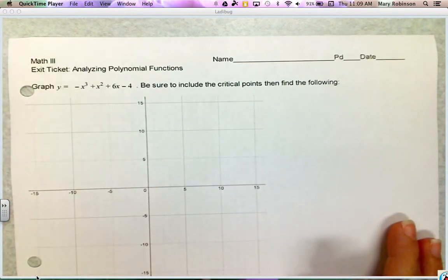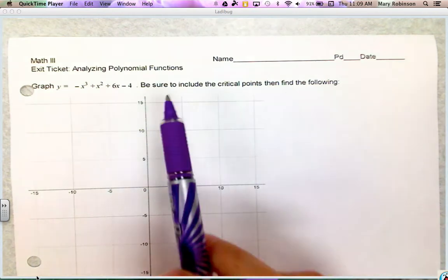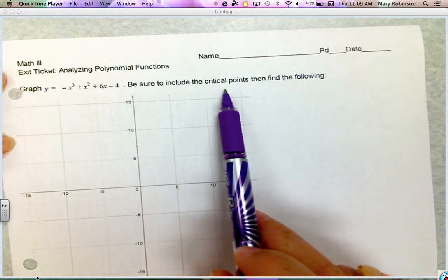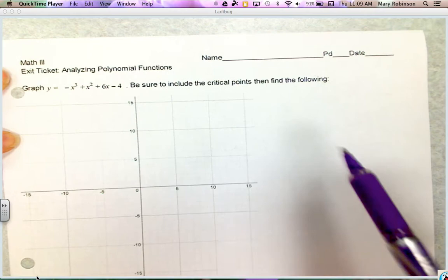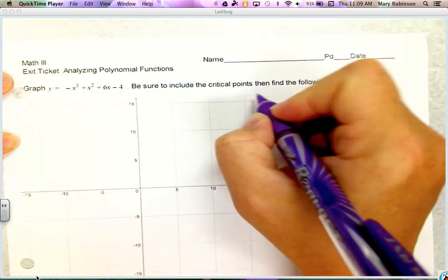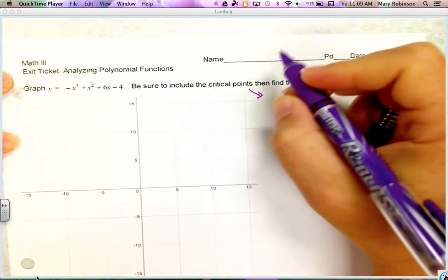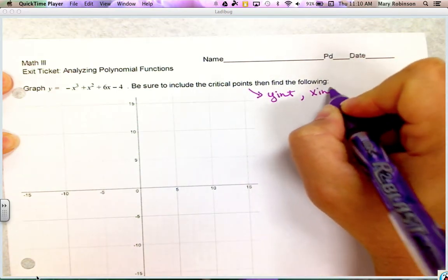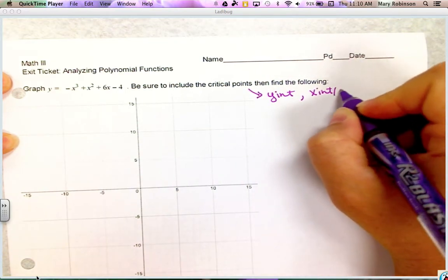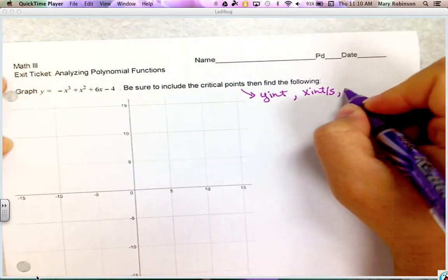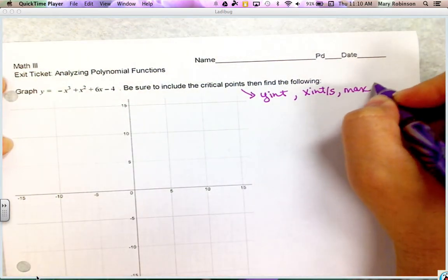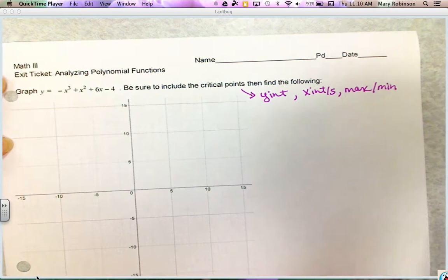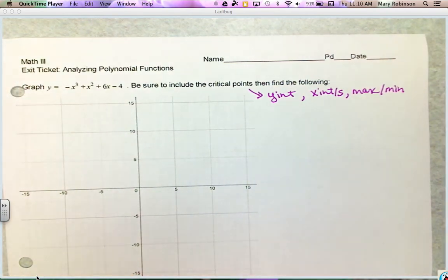Always read and understand what you're expected to do so you know what direction to take. It also says when you graph it to be sure to include all critical points before finding those. Just to remind you, critical points would include the y-intercept, x-intercepts, and any max or mins.